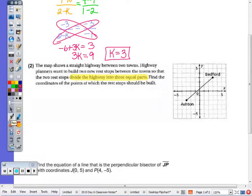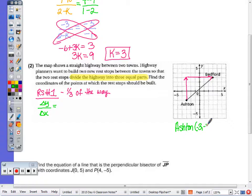I want to take a look at my slope. What's my rise over run from Ashton to Bedford? So rest stop number 1 is going to be 1 third of the way from Ashton to Bedford. So looking at the slope, change of y over change of x equals, well the two points Ashton is located at negative 3, negative 2, and Bedford is located at 3, 3. So change of y over change of x, that's going to be 3 minus a negative 2 over 3 minus a negative 3. And I get a slope of 5, 6.